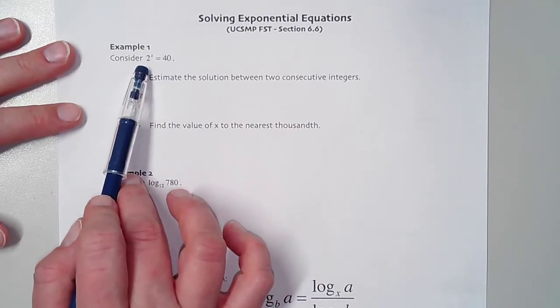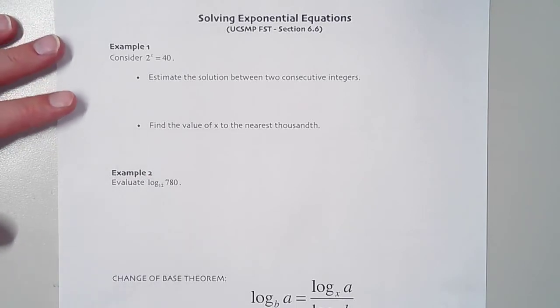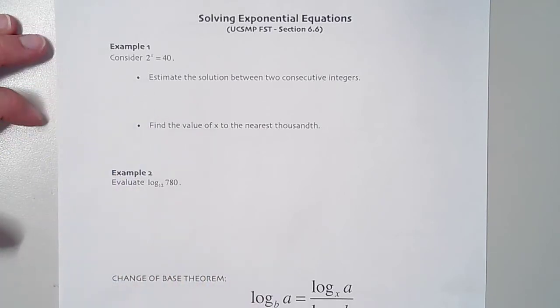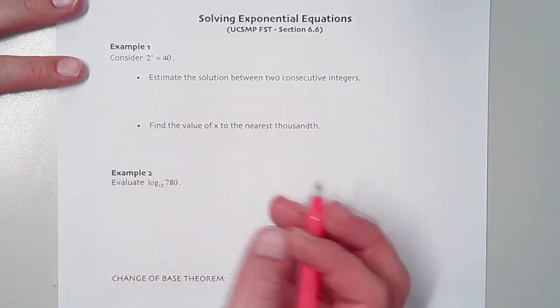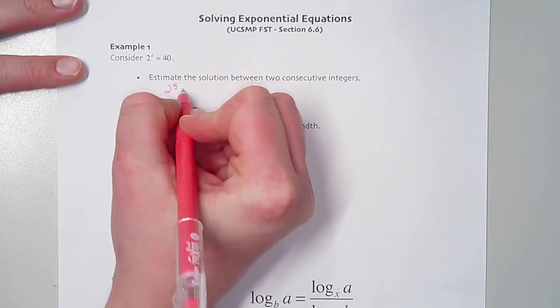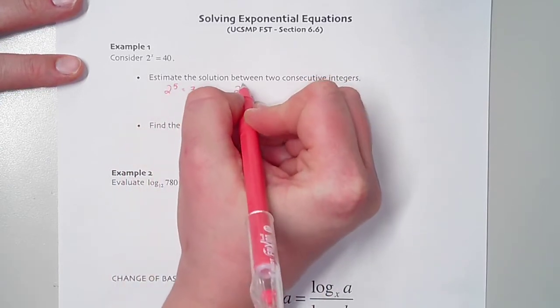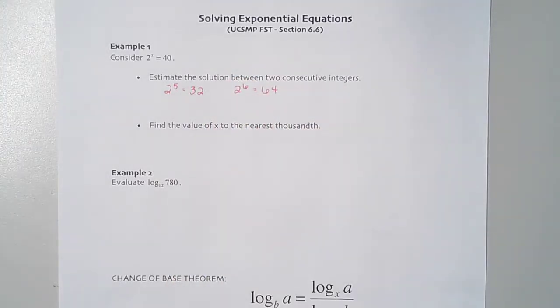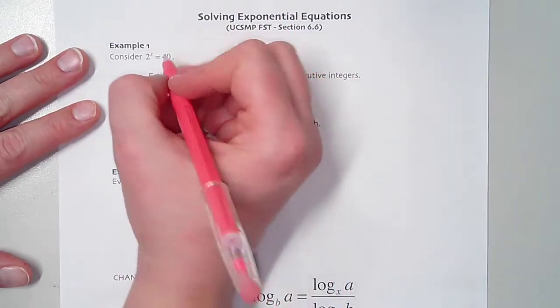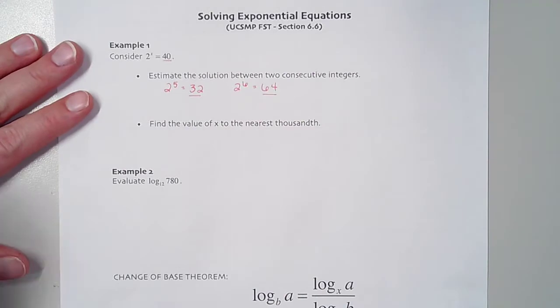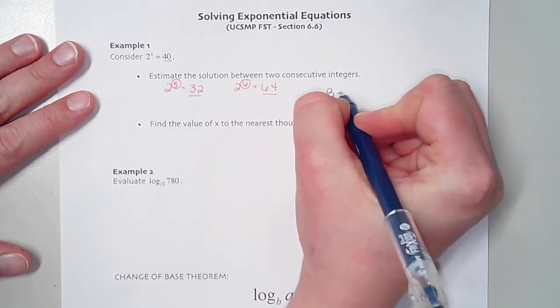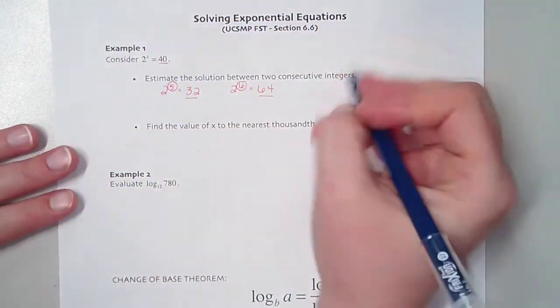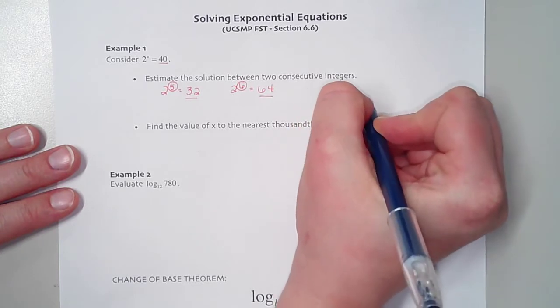Let's suppose I gave you an equation like this and said to solve for x. We don't really have a way to get that x out of the exponent, but let's see if we can estimate the solution between two consecutive integers. Let's think about our powers of 2. We know 2 to the fifth power is 32, and 2 to the sixth power is 64. Because 40 falls between 32 and 64, that gives us a sense that the exponent must be between 5 and 6.